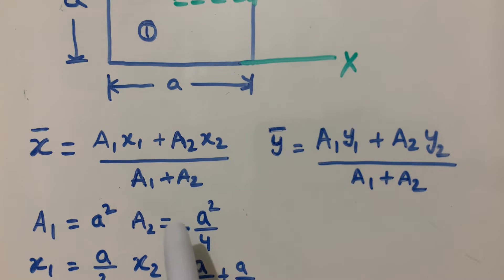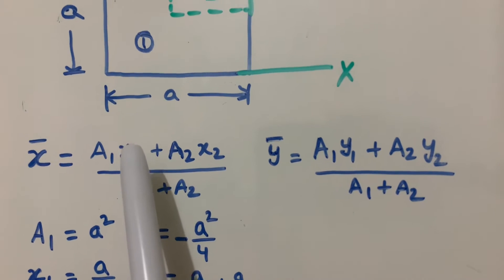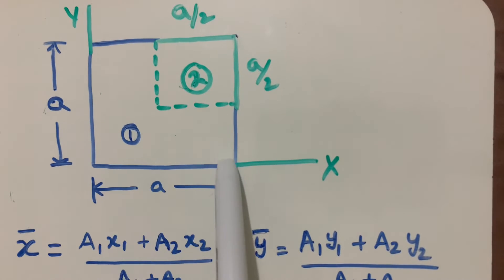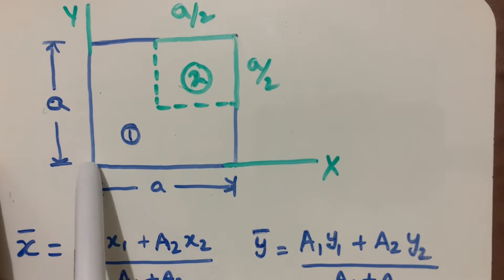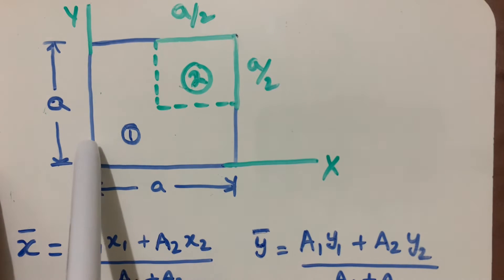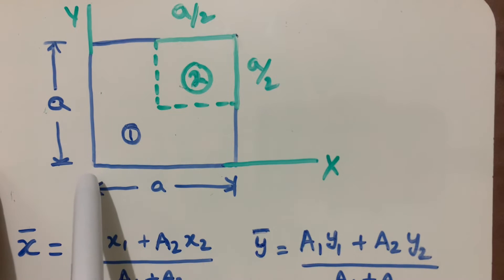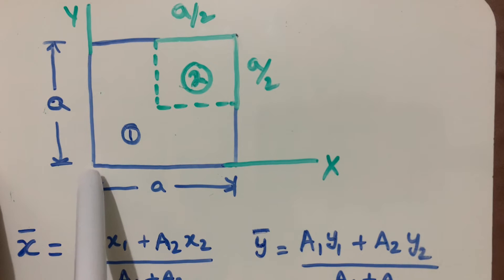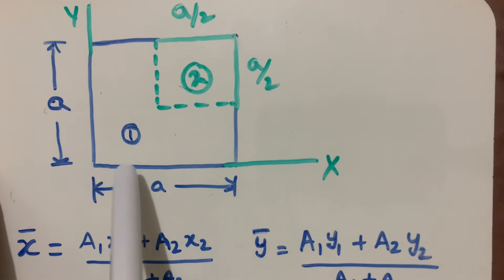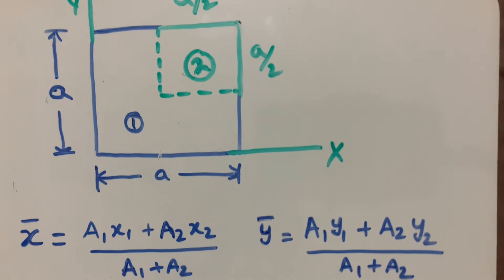Next we find x1, which is the centroid of the big square with respect to the y-axis. The centroid is at the center of the big square, so the distance from the y-axis to the centroid is a/2. Therefore x1 = a/2.